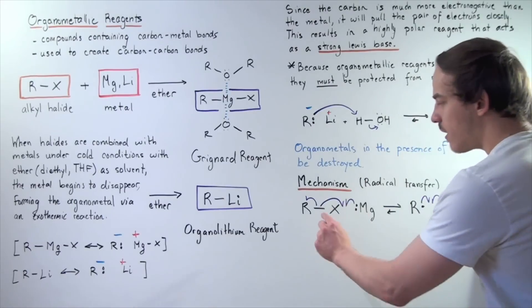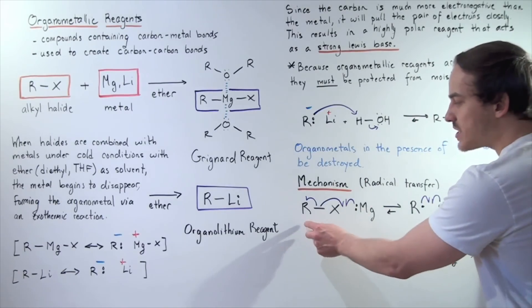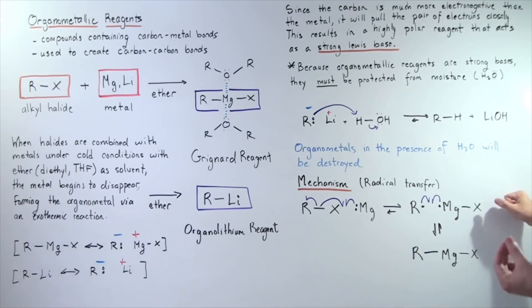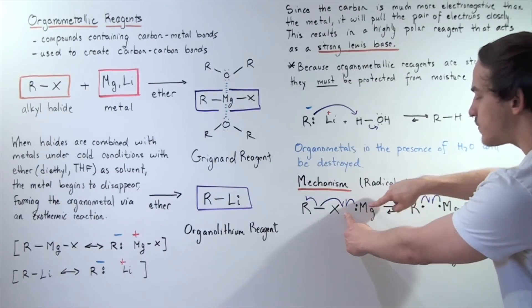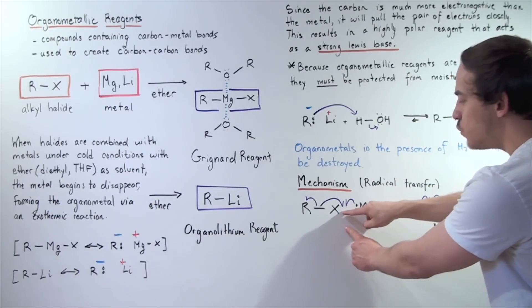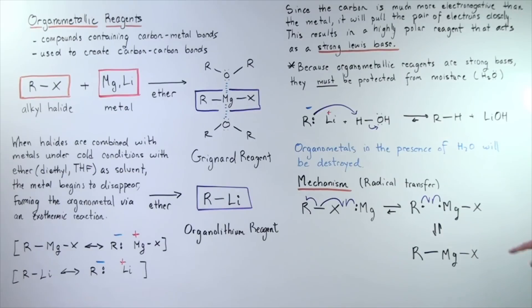In other words, one of the electrons breaks off and goes onto the R, the second electron breaks off and goes onto the X, and one of the electrons from magnesium combines to form a bond. So we have a covalent bond between magnesium and the halogen, and the magnesium has a spare electron.